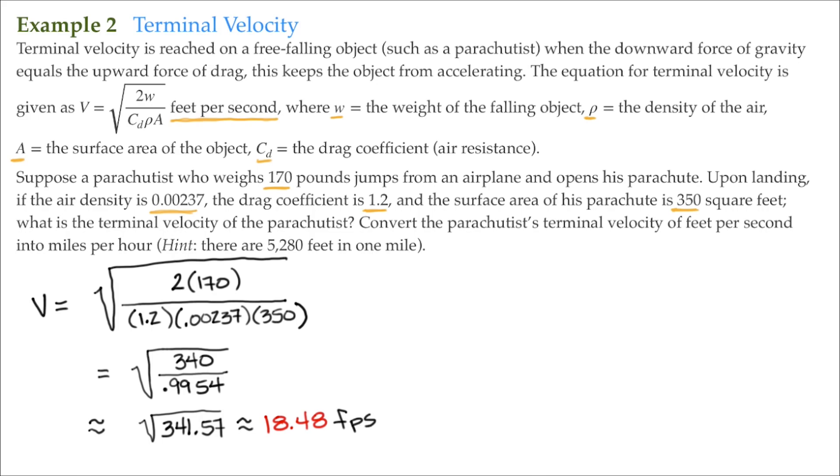And keep in mind that this is feet per second. So I'm going to write this as feet per second. So the velocity, the terminal velocity for a 170-pound parachutist, as they jump out of a plane, giving all these other parameters here, is traveling at 18.48 feet per second. But what we want to do is we want to convert that to miles per hour. We want to convert it to miles per hour.